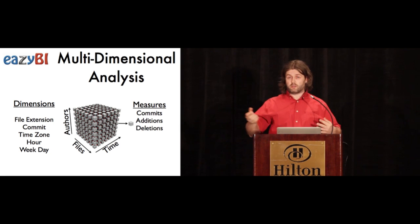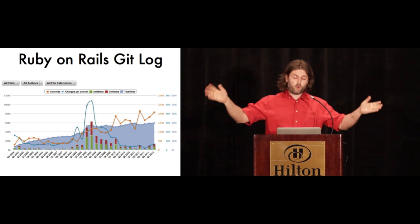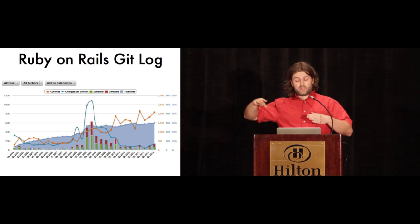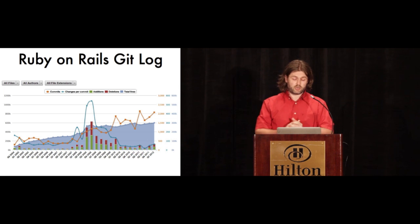As an example, I will use Ruby and Rails Git commit log. This is a history of the whole Ruby and Rails Git log, where you can see the number of commits and additions, deletions, and how the total number of lines has grown over the years.